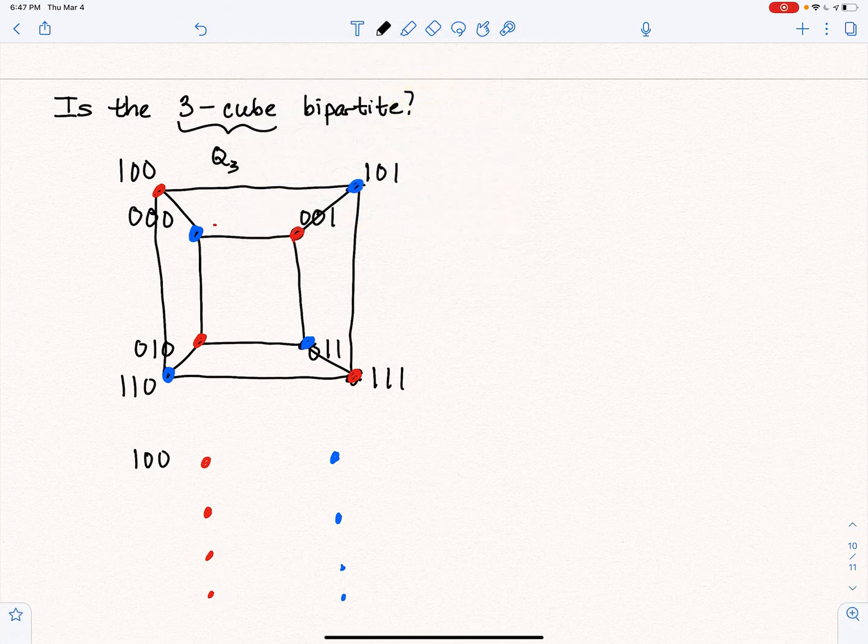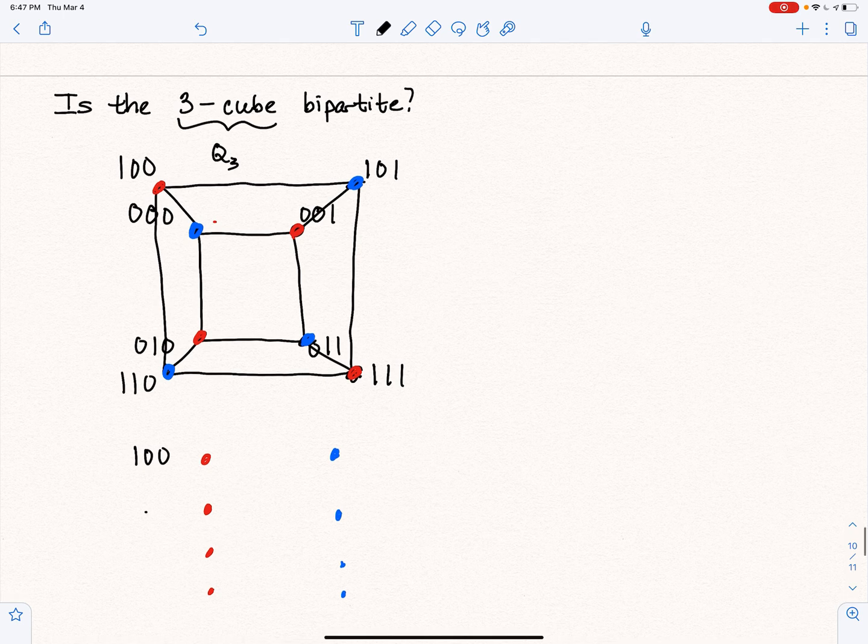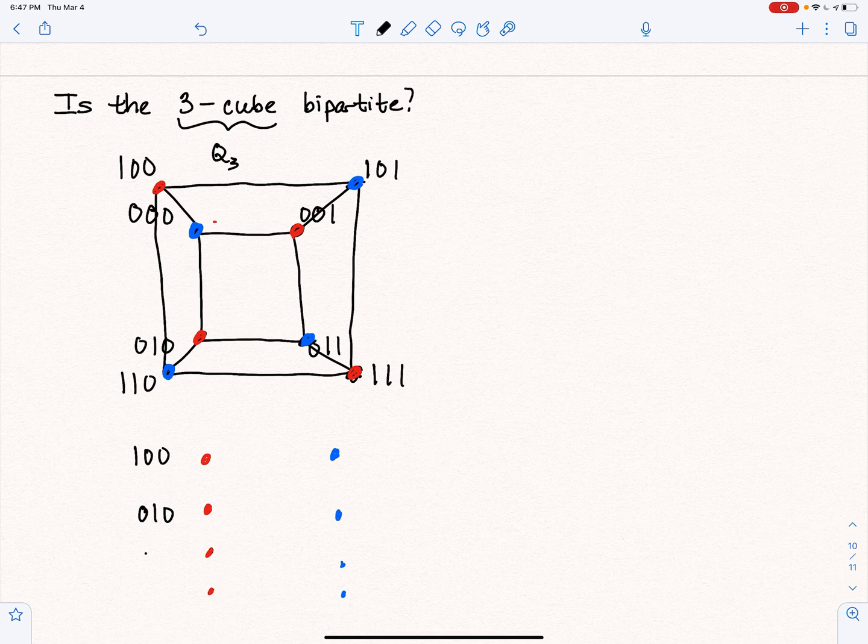the red vertices are 1, 0, 0. We have 0, 1, 0. Yeah, we know those are not adjacent to each other. We have 0, 0, 1. And we have 1, 1, 1. And the blue vertices are 1, 0, 1, 0, 0. I'm not writing these in any particular order. We don't really have to.